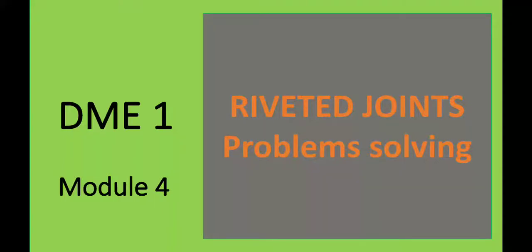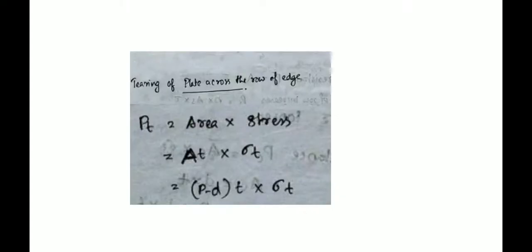In the fourth module, we are already learning riveted joints. We are learning types of butt joints and lap joints. We are learning the equations of failure and learning problems.